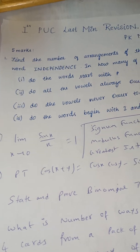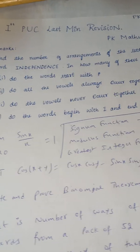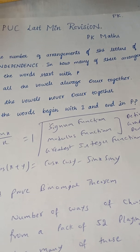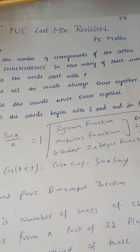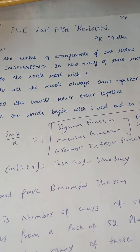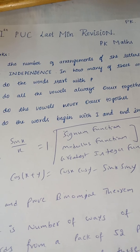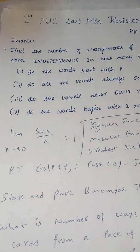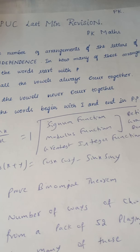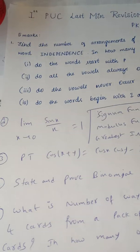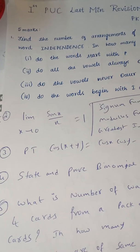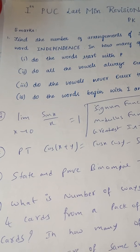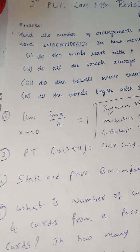The next question is to prove that cos(x + y) = cos x cos y − sin x sin y. This is also a very important question from an exam point of view, from trigonometry. Either this question will be given for 5 marks or for 6 marks.